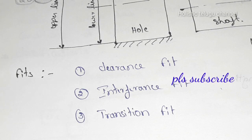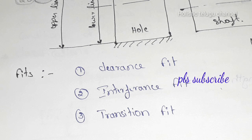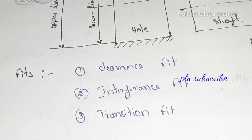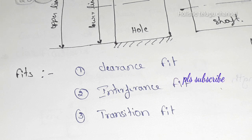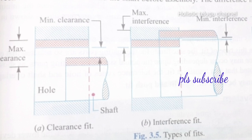In tolerances and fits, we use unilateral and bilateral — two types of tolerances. There are three types of fits: clearance fit, interference fit, and transition fit. The degree of tightness and looseness between two mating parts is known as a fit.